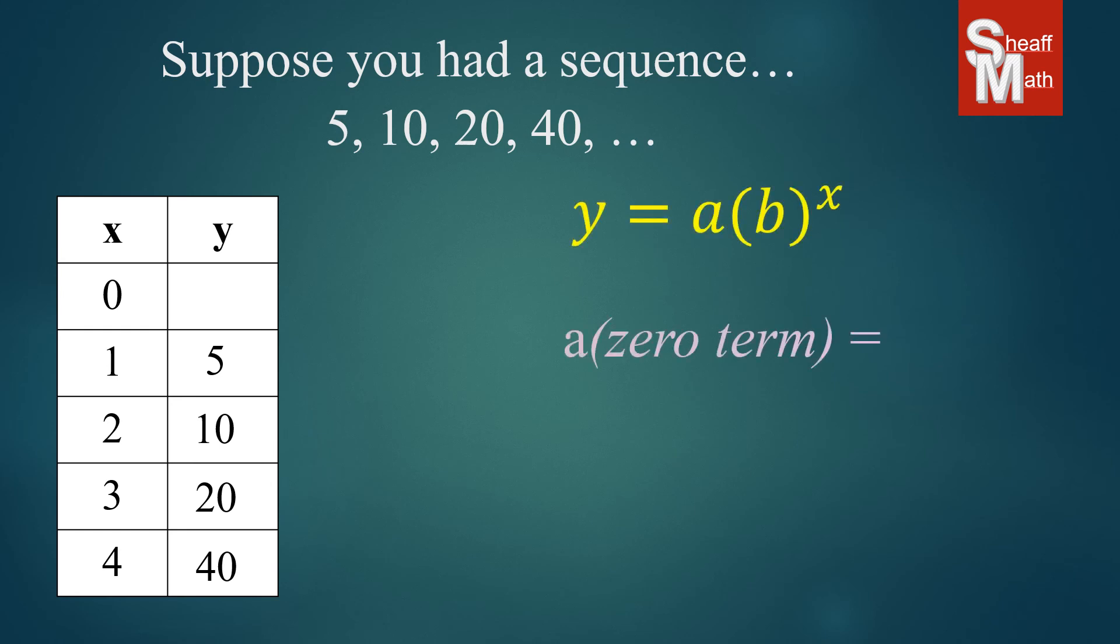We will find our common ratio first. 10 divided by 5 is 2. 20 divided by 10 is 2. And so we found our common ratio.